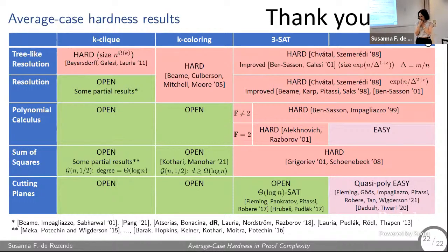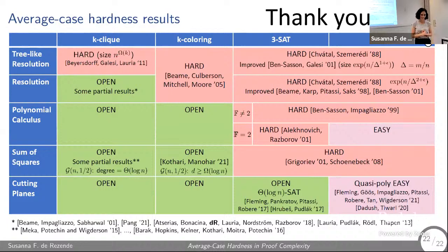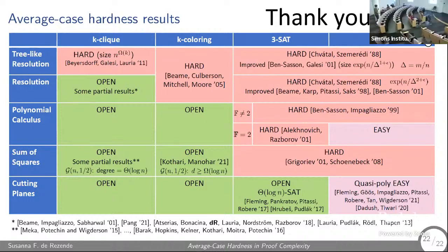There are some results showing classes of problems that are actually equivalent between proof systems. And relatedly, we expect this entire picture to collapse — for 3-XOR, the easy squares case means these systems are equivalent there.